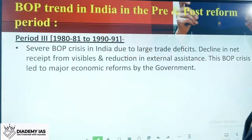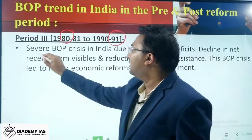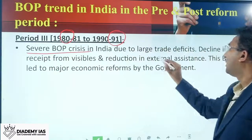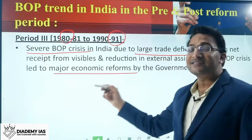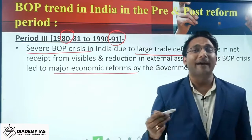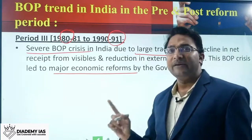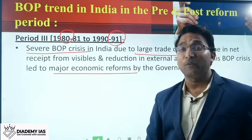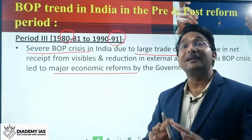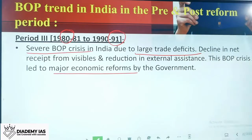After 1980 till 1991, there was a severe BOP crisis due to large fiscal deficit, decline in net receipts from visible trade, and reduction in external assistance. This BOP crisis led to major economic reforms. India had to go to the IMF and World Bank, demand foreign exchange reserves as borrowing, and in return the IMF and World Bank imposed certain conditionalities, asking India to open up its economy. From that point of time, the Indian economy was globalized.